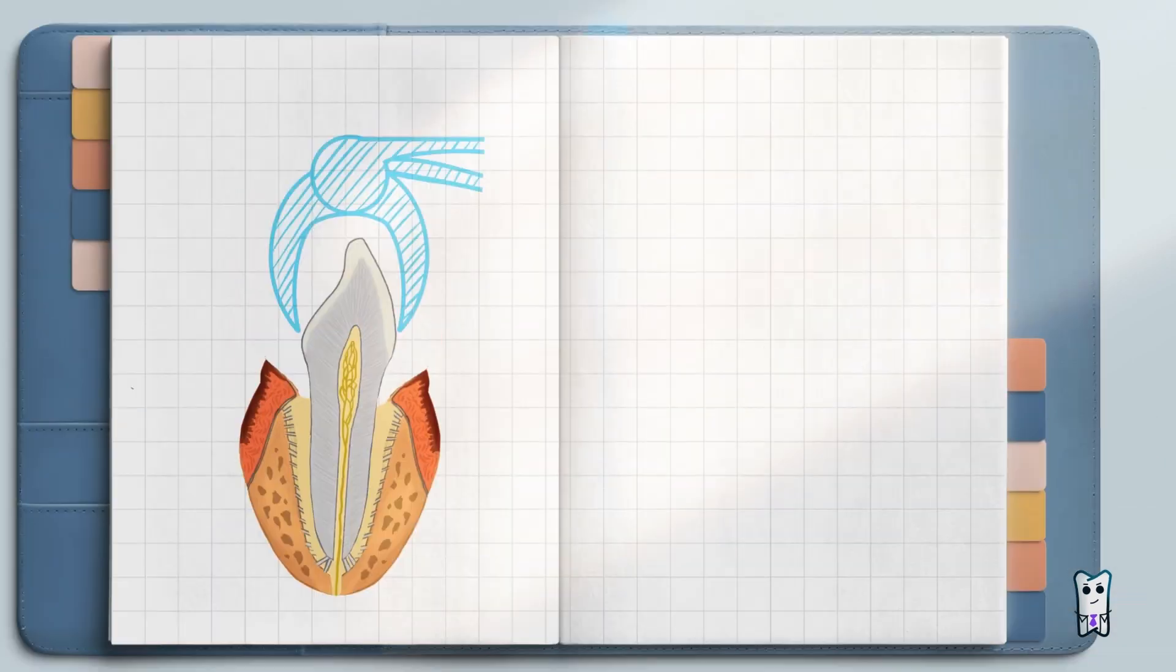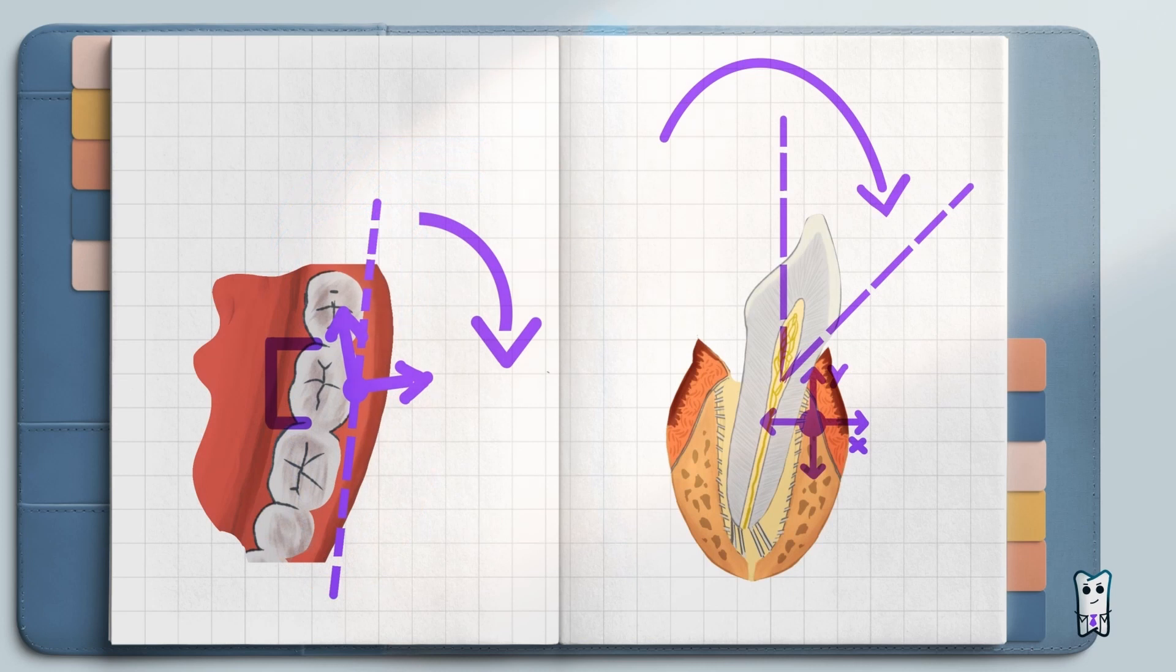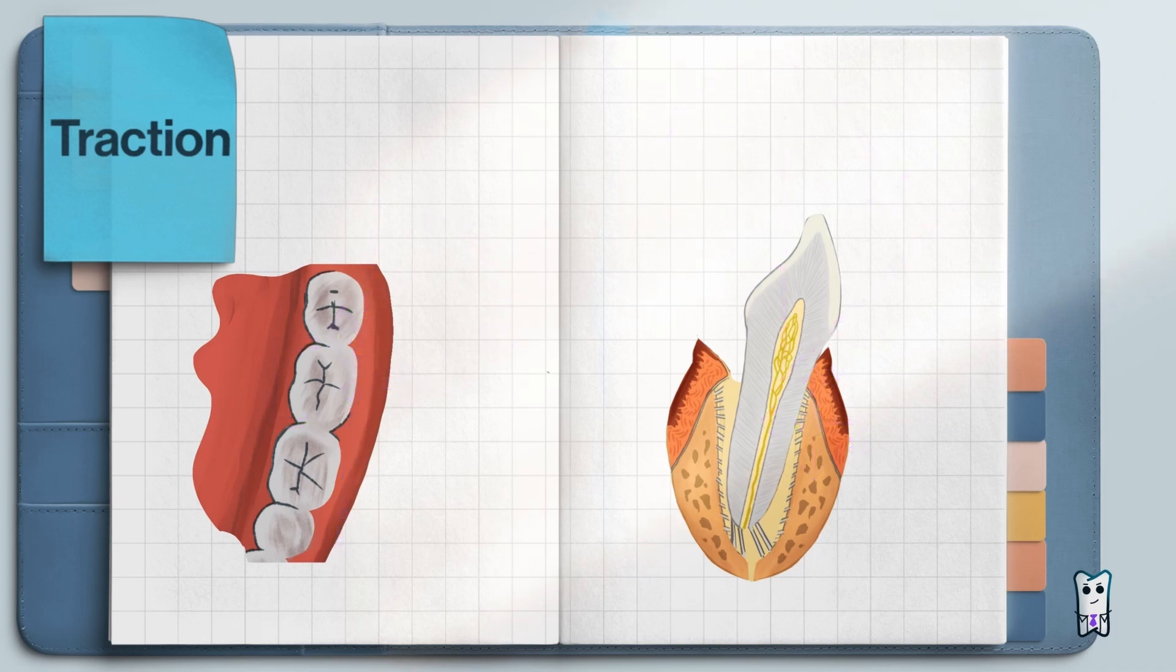So you have done the syndesmotomy and luxated the tooth. It's time to remove the tooth from the alveolus. How is this step called? Traction, correct. Let's understand what's the idea of the traction and then we'll also explain the technique.